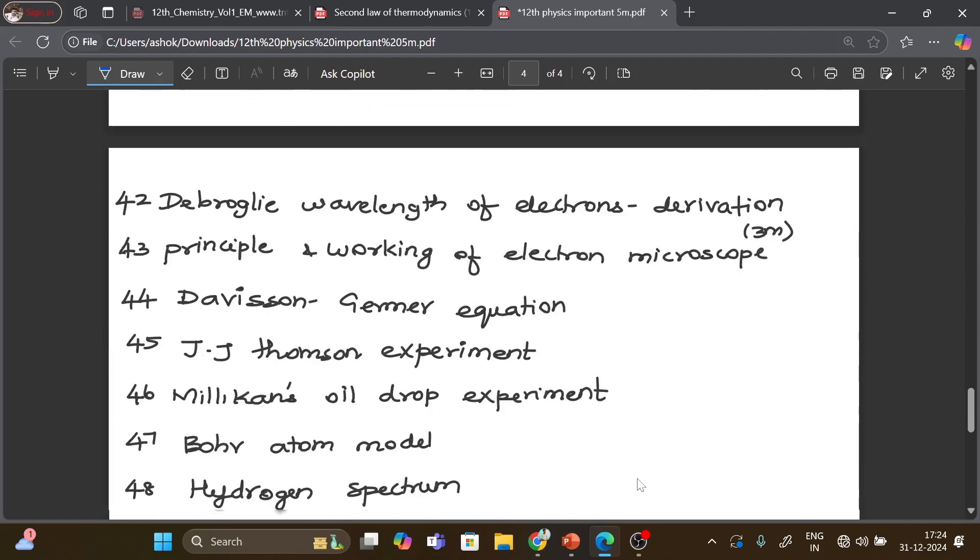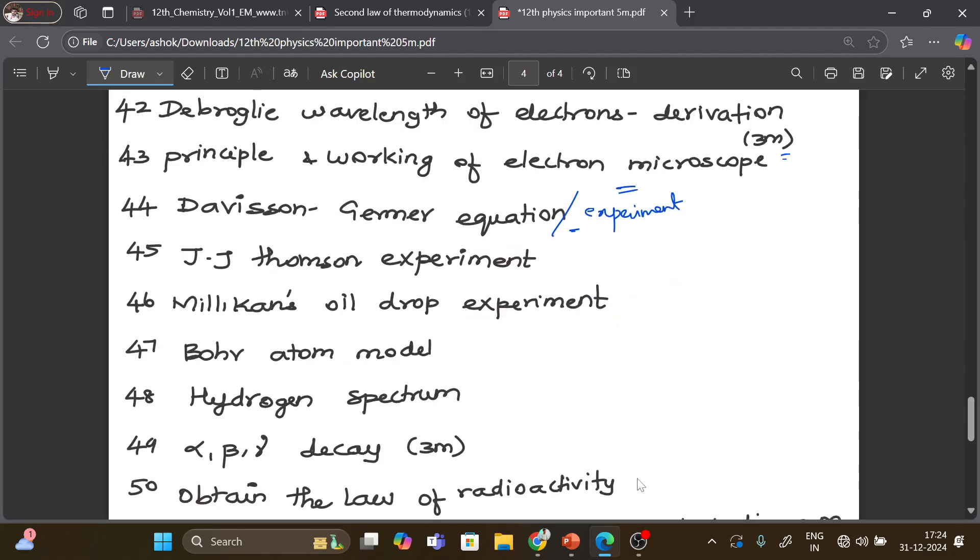De Broglie wave of electron derivation, 3 mark. Principle and working of electron microscope. Davisson-Germer experiment, 8th lesson, very important 5 mark. Then JJ Thomson's experiment, Millikan's oil drop experiment, Bohr atom model derivation. Radius derive, so R is equal to some value derivation.